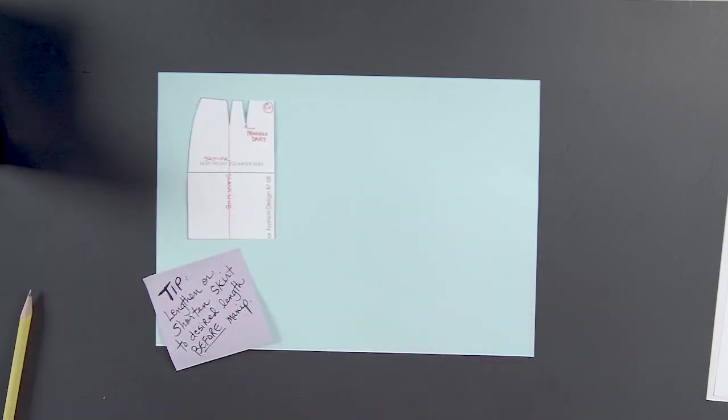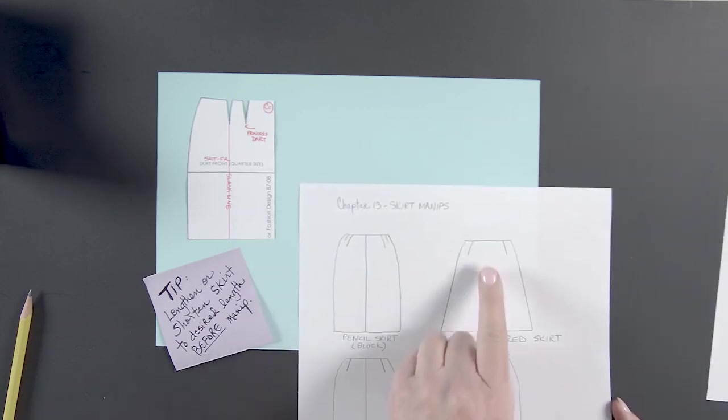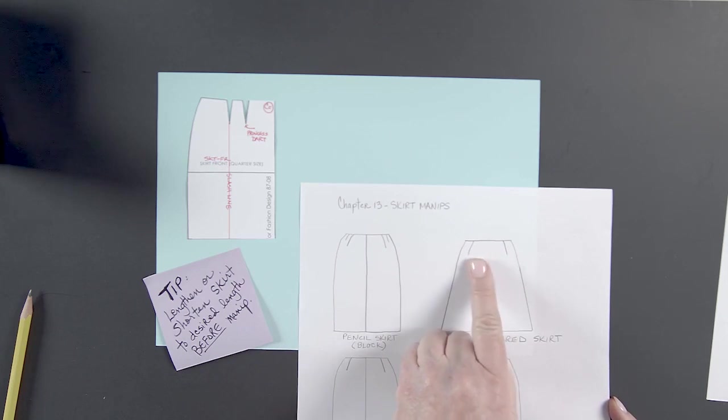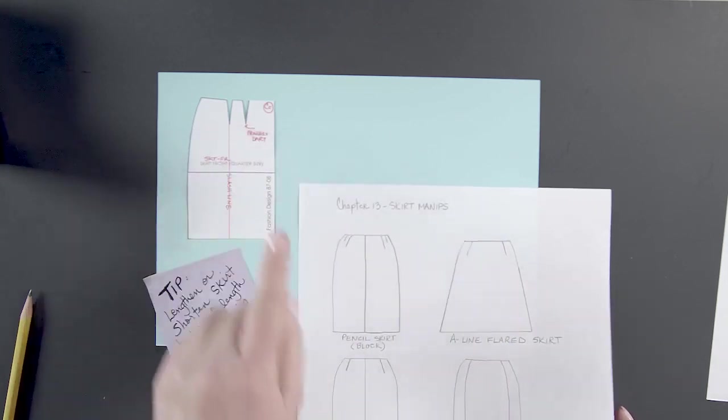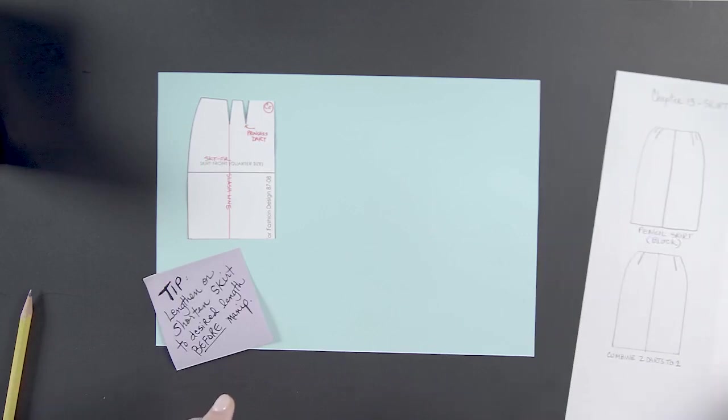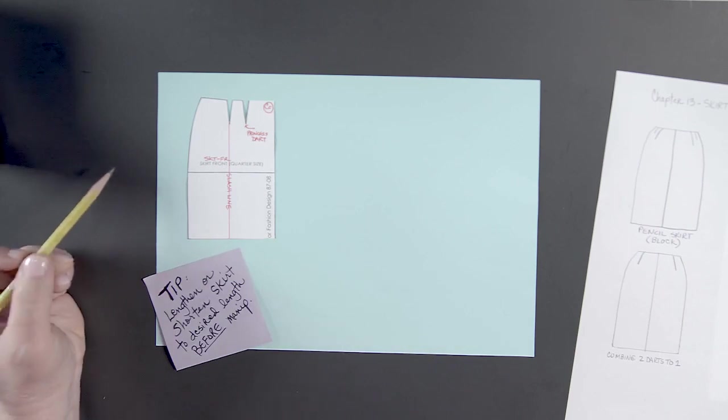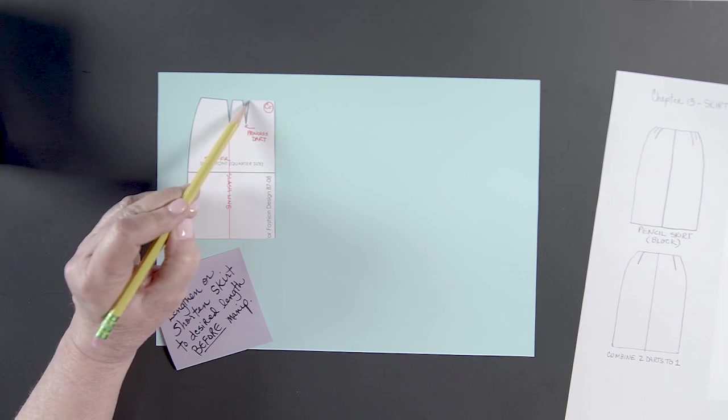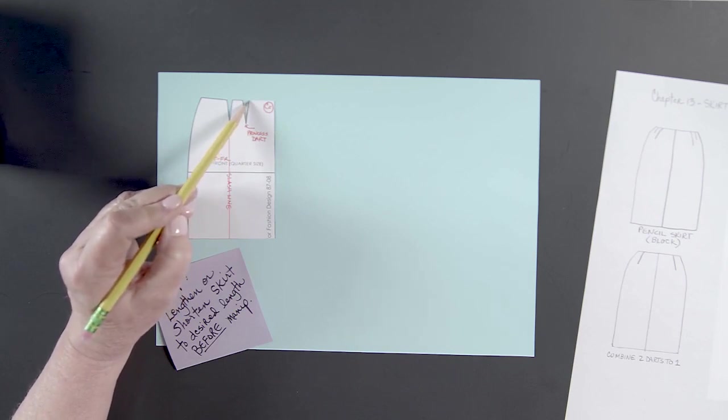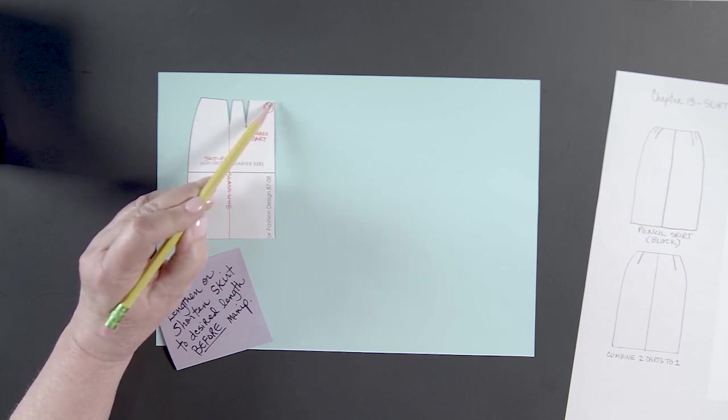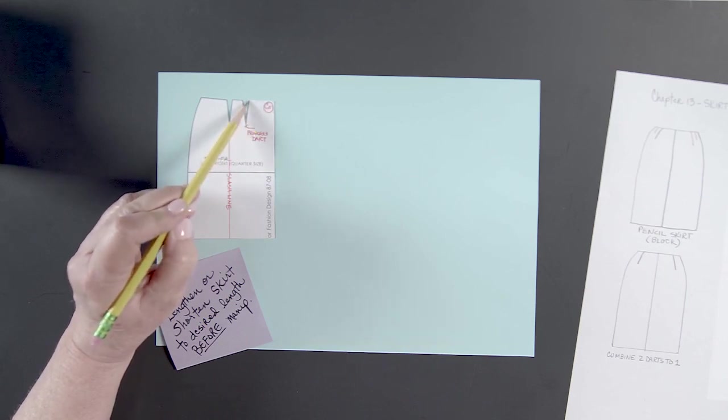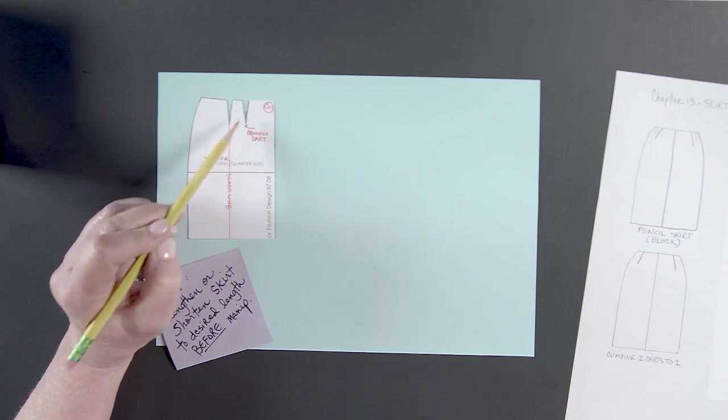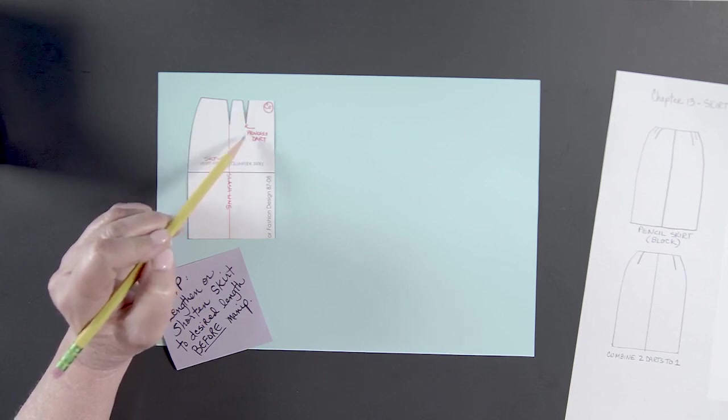Now, let's take a look at this. The silhouette here shows the dart, one dart here. And we have two darts here. So how do we distinguish between the two? What I think is really important for you to remember is that this measurement from center front over to this first point here is the amount of length between the center front and the princess seam. So we're going to